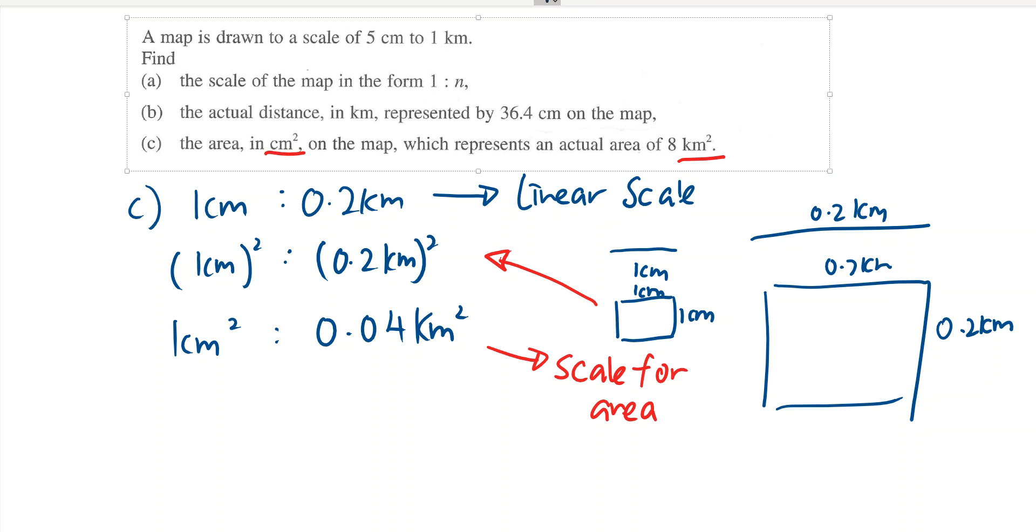So 0.04 multiplied by what will get 8? All I need to do is use my calculator: 8 divided by 0.04 times 200. I will have 200 cm square, and this is how I find my answer.